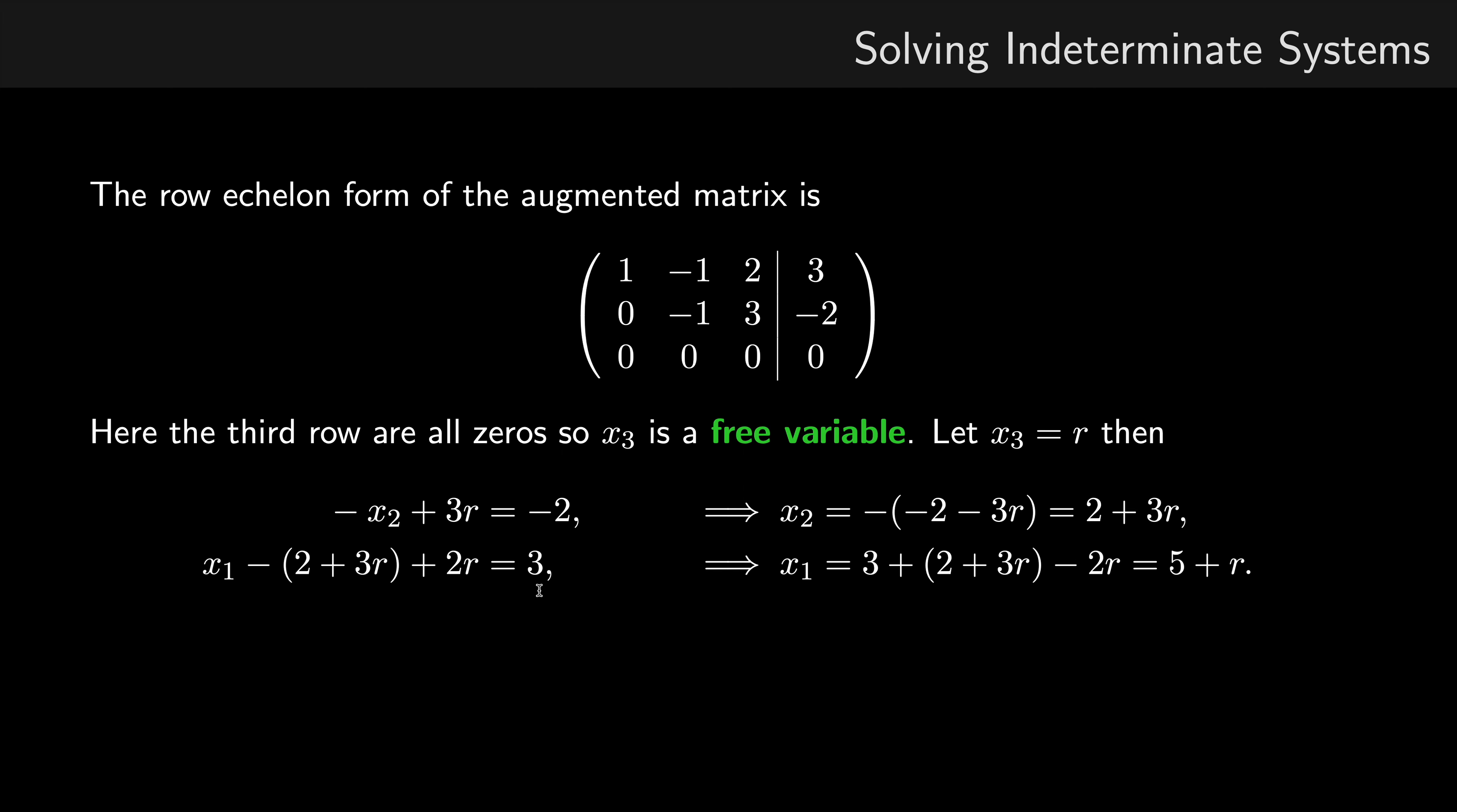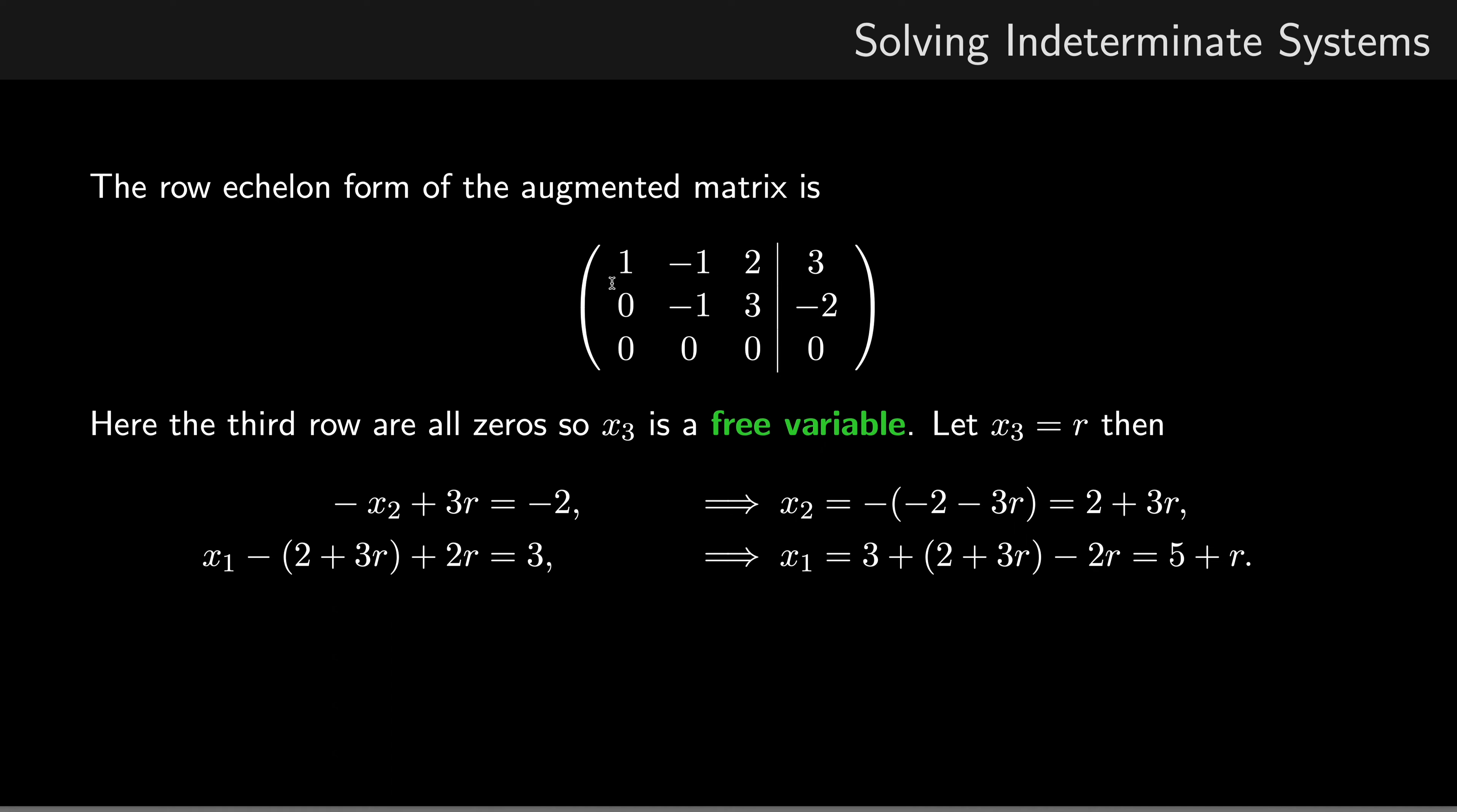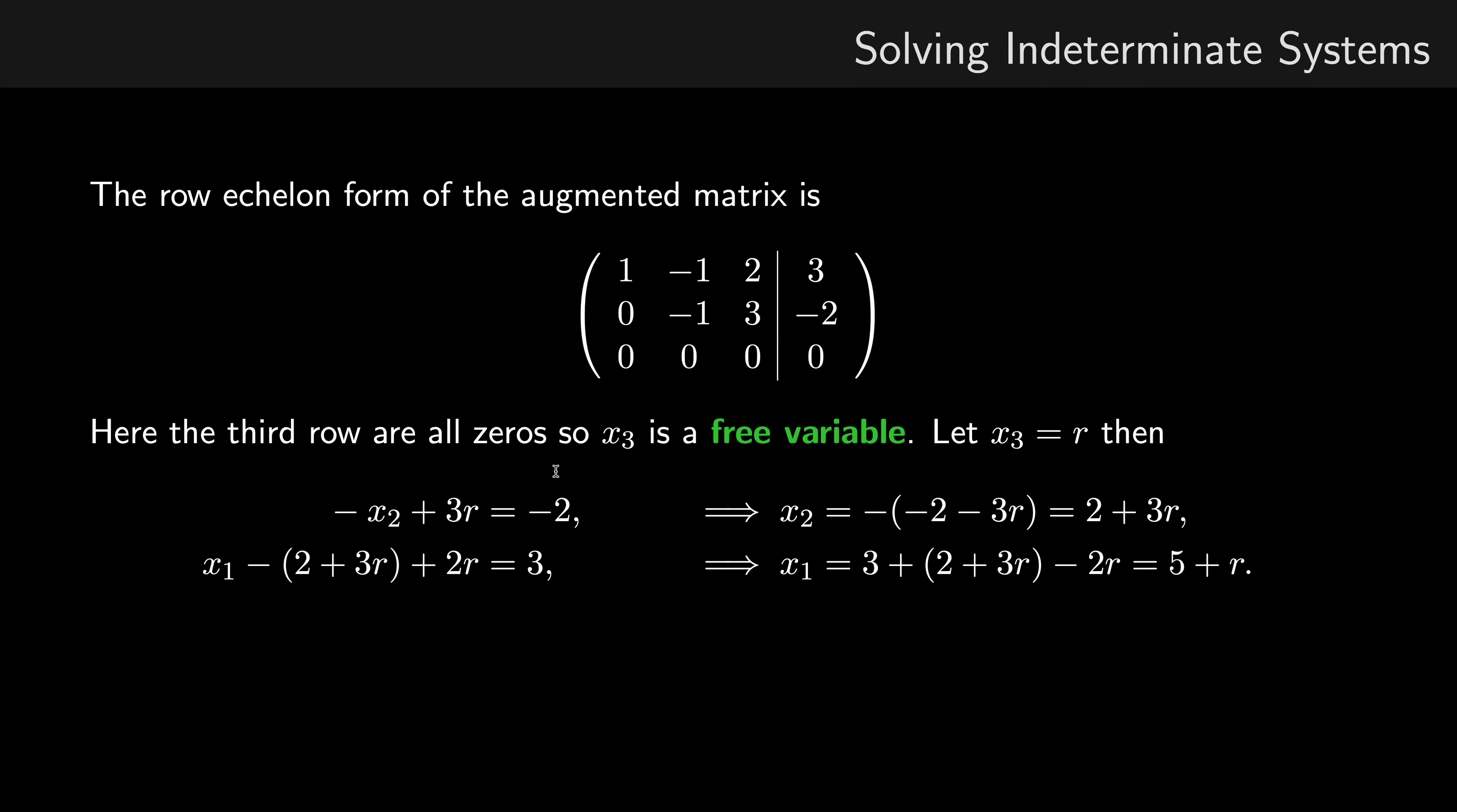Do similar for the first equation. So here we have x1 minus x2. Well, we know that x2 is 2 plus 3r, so that's what we've got here, plus 2 times x3. Well, we know that x3 is r, and that equals 3. So once again, we rearrange to make x1 the subject, and therefore the solution for x1 is 5 plus r.